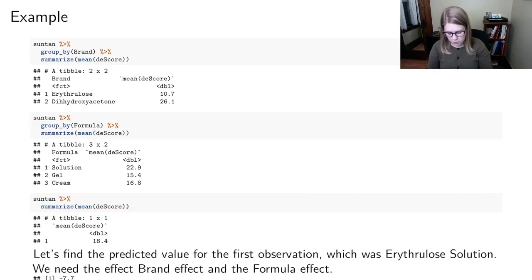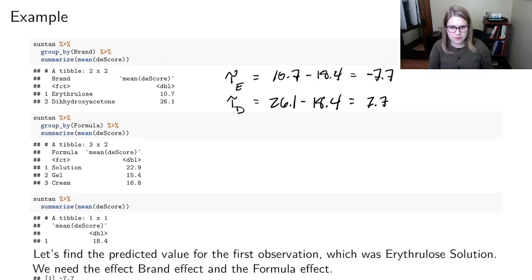So if we wanted to, let's say we've got our tau sub e chemical, and our tau sub d chemical, the way that we would do this is we would figure out, okay, 10.7 minus 18.4, I think that comes out to be negative 7.7. And again, 26.1 minus 18.4. And that one's positive 7.7. That's just a coincidence.